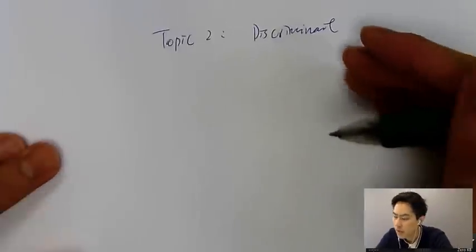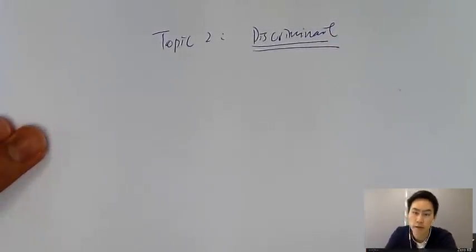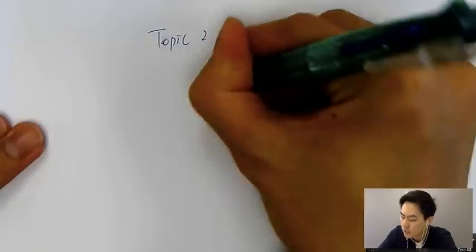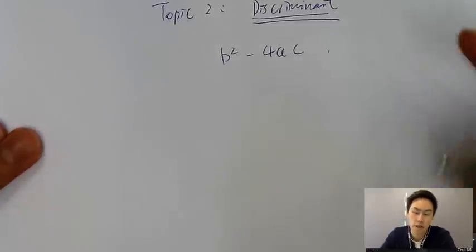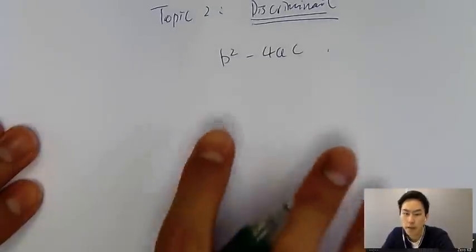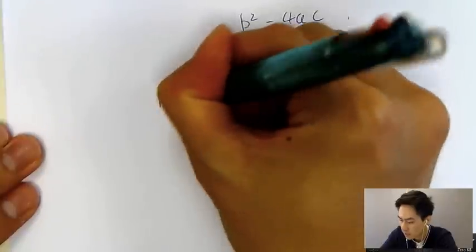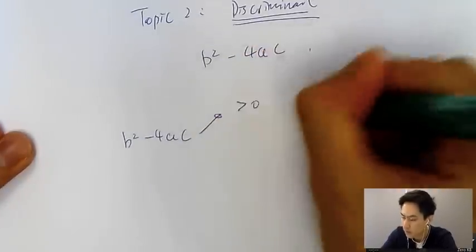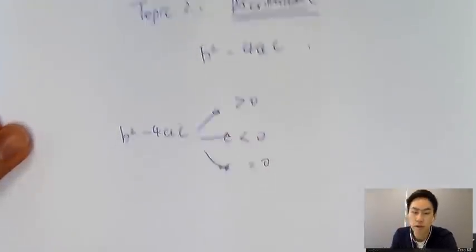This is Edward from Hong Kong Excel and the topic we're going to share today is the discriminant — that is b squared minus 4ac. This kind of question can be very hard, but the three basic ideas you need to know are: if b squared minus 4ac is bigger than zero, smaller than zero, or equal to zero — what do you get?